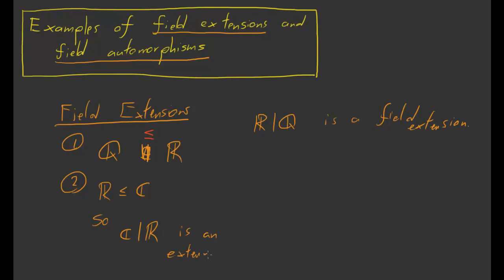Let me just mention, trivially of course, that C over Q is also a field extension. Extension is a transitive property. If one field is inside of another and that second field is inside of a third, then the first field is inside of the last.